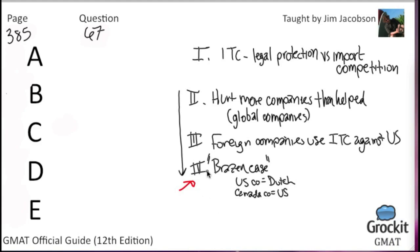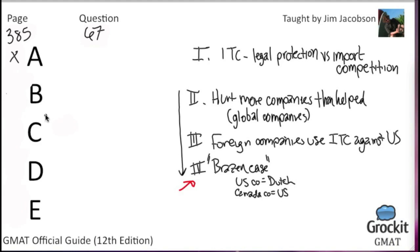A: companies in the United States may receive no protection from imports unless they actively seek protection from import competition. The passage does not say that — that's going way too far beyond what the passage says. It just says that one of the ways that companies can get import protection is by going through the ITC.